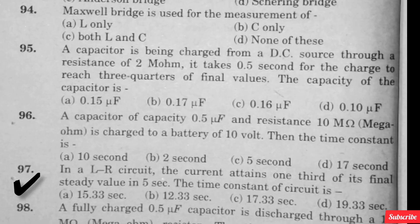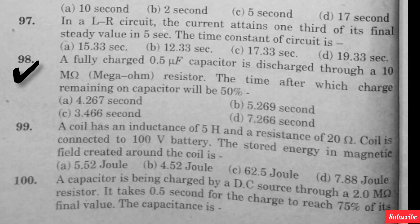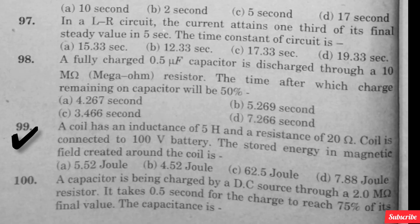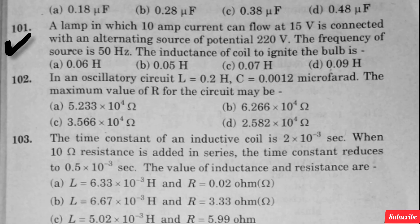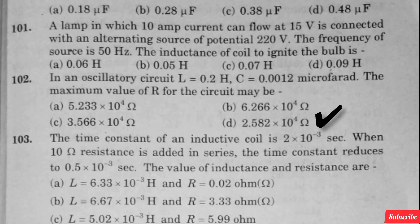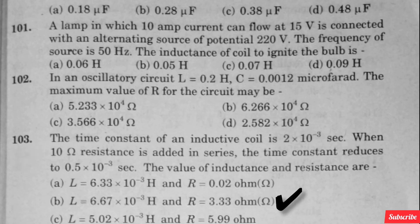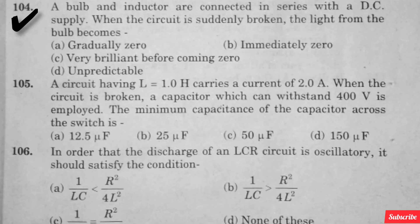In question 97, option B is right. In question 98 numerical, option C is right. In question 99 numerical, option C is right. In question 100, option A is right. In question 101, option C is right. In question 102, option D is right. In question 103, option B is right.